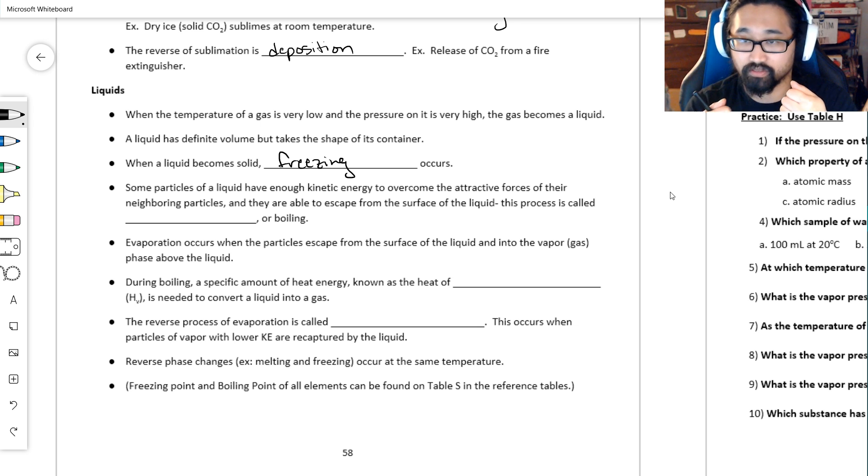If the particles of a liquid have enough energy to overcome the attractive forces—again, if they're moving slow they have attractive forces, but the faster they move, they can overcome that attraction and escape from the surface of a liquid. That process is called vaporization.